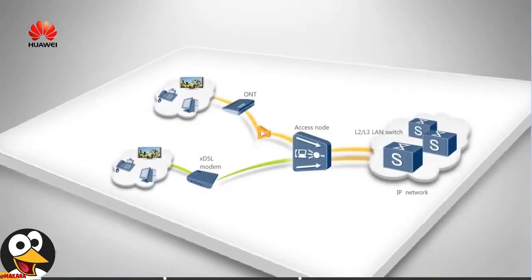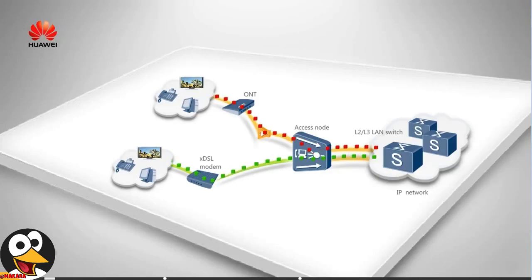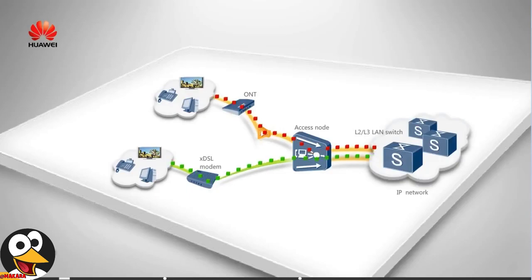In an IP network, access devices are used to provide VoIP, IPTV, and HSI services for home and business users. In the downstream direction, the access devices provide HBSL access modes for traditional broadband users and also provide FTTX access for users who require higher bandwidth. In the upstream direction, user service traffic is forwarded to the upper layer IP network through upstream ports on the access devices.